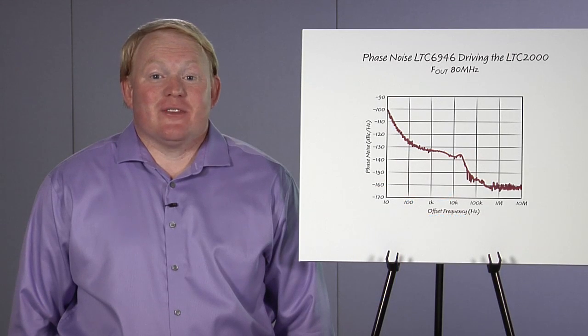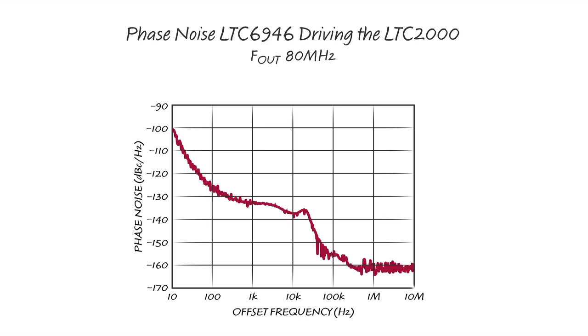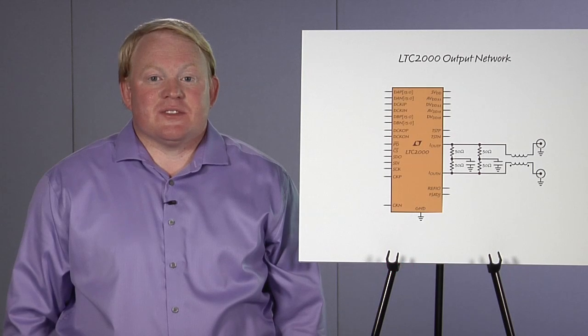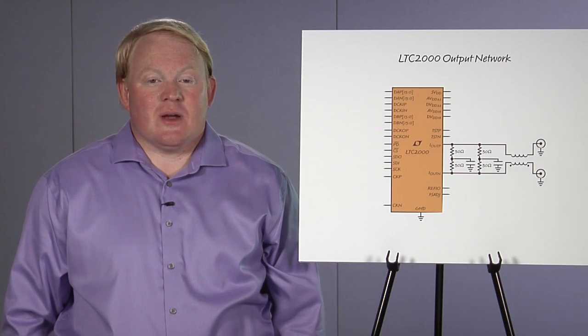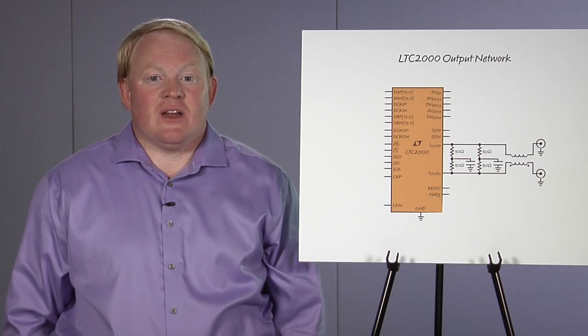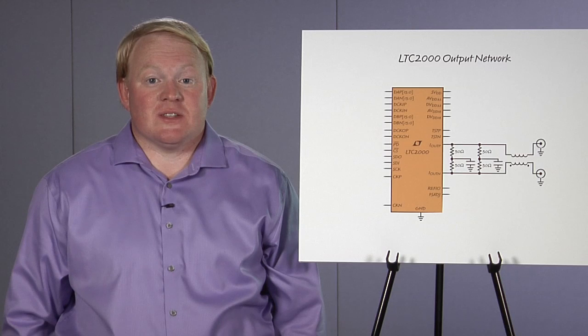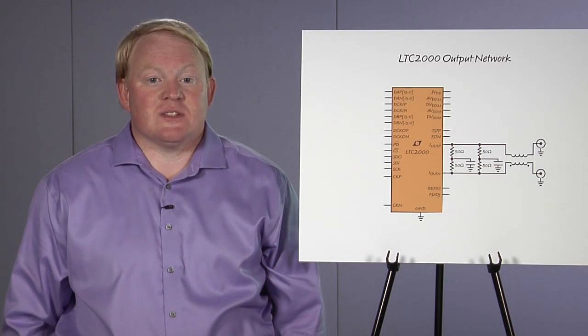The results speak for themselves. Here is a plot of the phase noise of the LTC6946 and the LTC2000. The additive phase noise of the LTC2000 is almost undetectable. As good as these results are, if ultra-low phase noise is required, the LTC6945 can be used with an external VCO to reduce the close-in phase noise even further.